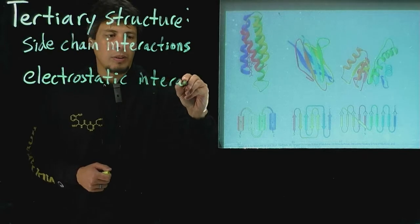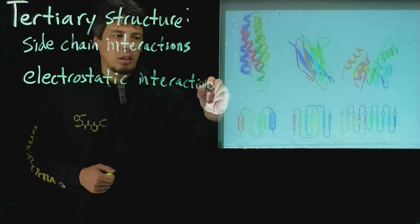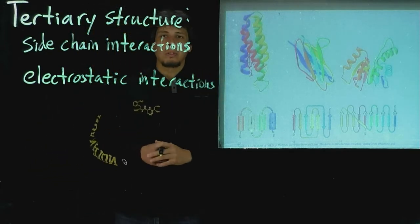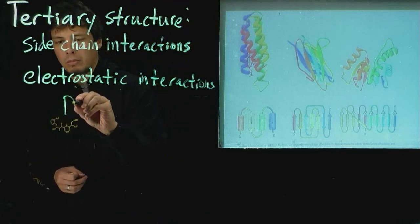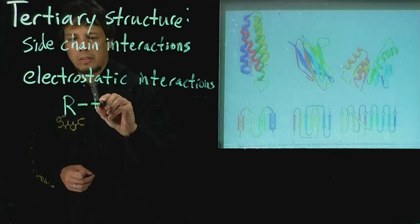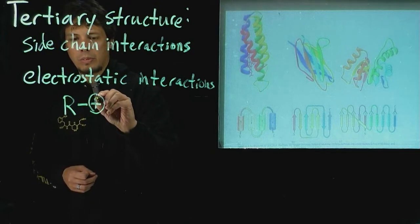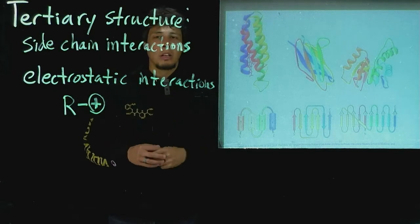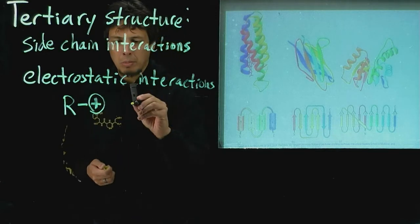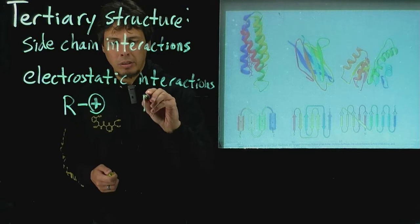And so that will be, for instance, an interaction between a positively charged group, such as an arginine. So we'll just put a positive charge here. We won't draw the whole side chain out, but that will have a positive charge at pH 7. And then something like glutamate, which has a negative charge.